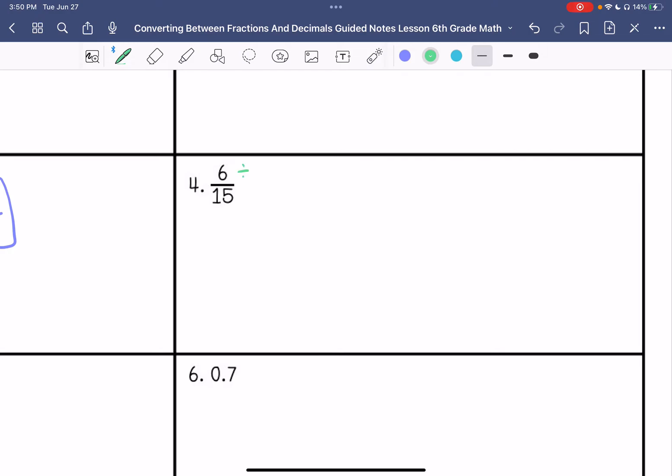We are going to simplify if possible. Divide both by three. We get two fifths. Then we do 2 divided by 5. This is 0 and 4 tenths.